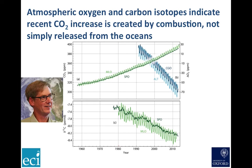We also see a decline in the fraction of carbon in the atmosphere that's in the form of the carbon-13 isotope, again confirming that this additional carbon dioxide is being produced by burning carbon that was once — whether in the form of coal or plant matter or whatever — the product of photosynthesis.